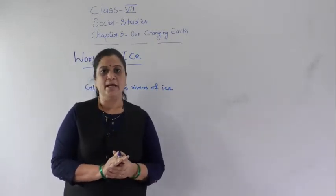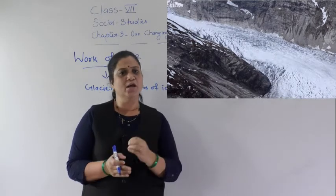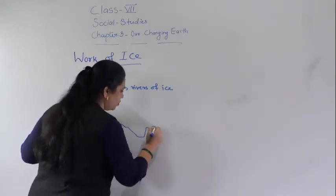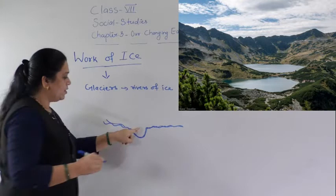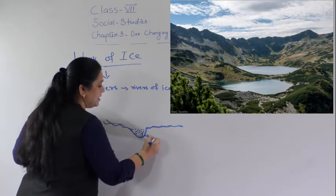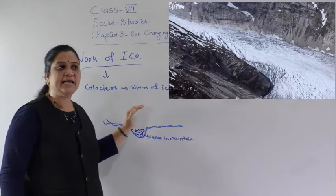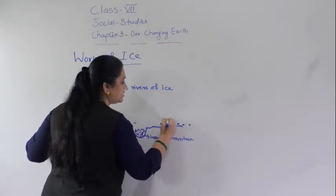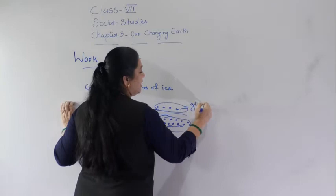Glaciers are rivers of ice. When they move down from the mountain, they erode the landscape by loosening the soil and rocks in their path. As glaciers move down, they erode the soil and rocks, forming hollow spaces. When the ice melts, these hollows get filled with water, forming beautiful lakes in the mountains. As they move, glaciers carry sand, silts, and small and big rocks, depositing these particles at other places.